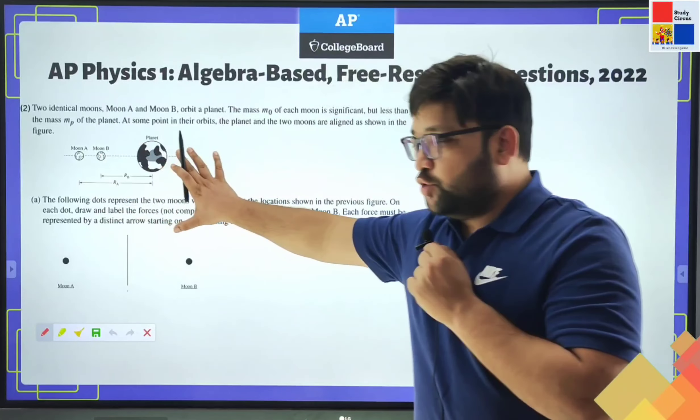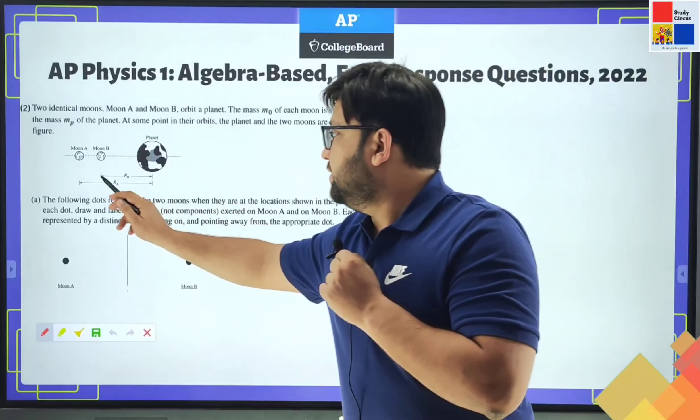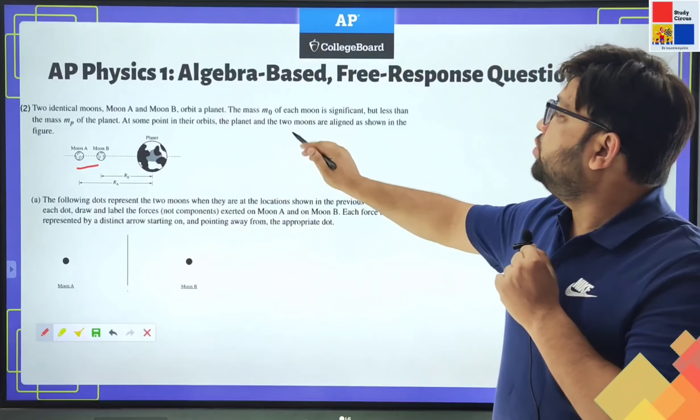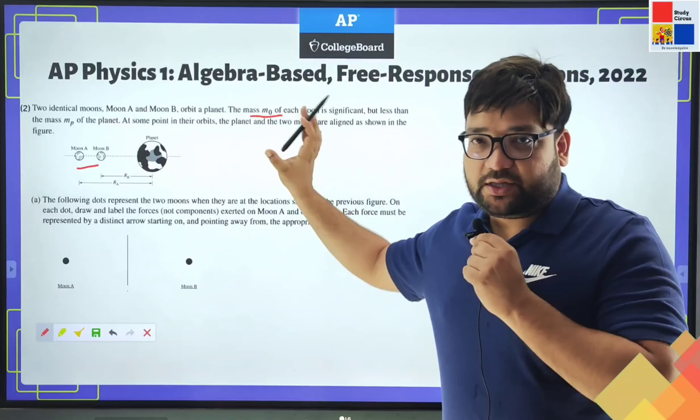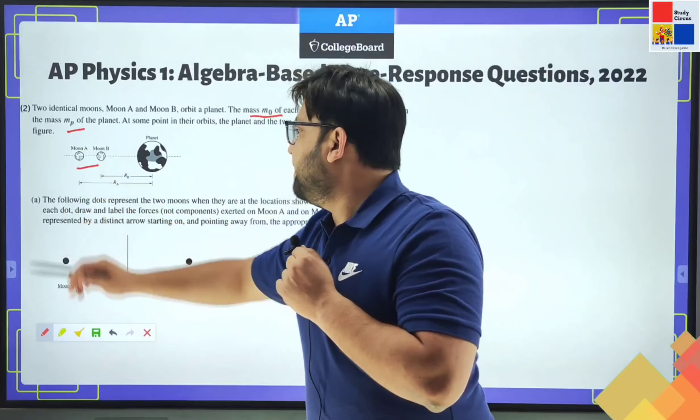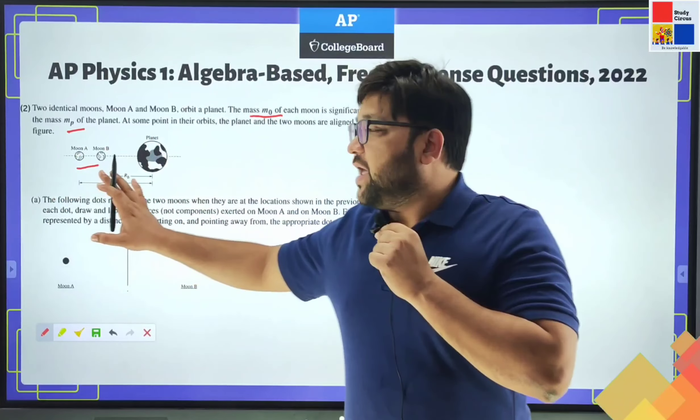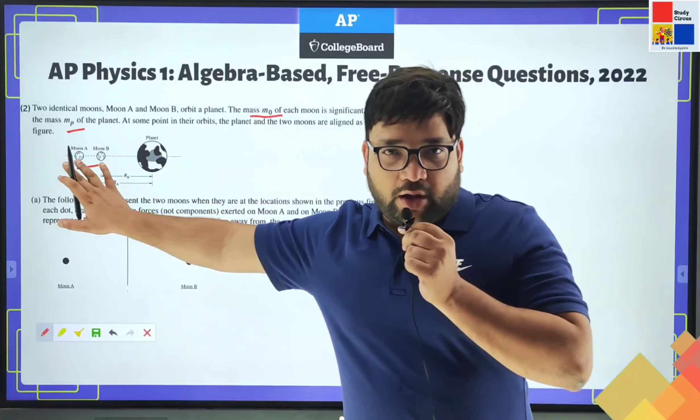There are two identical planets, moon A and moon B. And there is this planet. The two moons are identical, each having mass M0, and the mass of the planet is Mb. The alignment of the moons and the planet is like this - they are along a straight line.